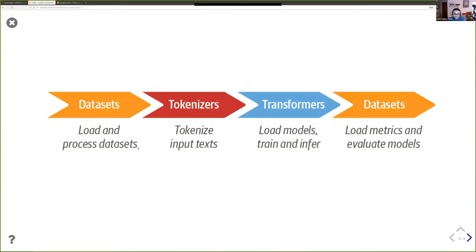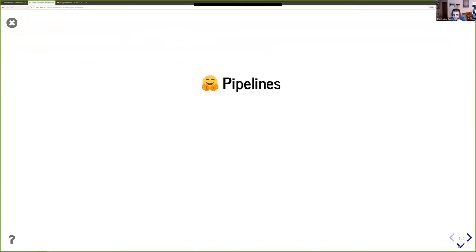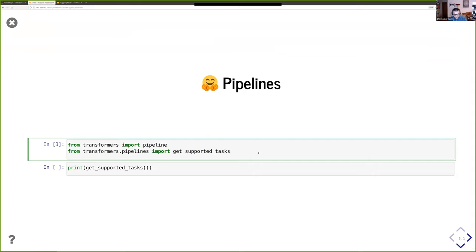We'll be covering datasets, tokenizers, and the transformers library. As Beno said, one of the most important things is data collection — you have to find good quality data aligned with your task. You have to pre-process it in a way understandable by your neural network, which is where the tokenizers library comes in. The meat of the whole thing is the transformers library — a selection of all the models you could need to train a transformer. We'll start by looking at pipelines.